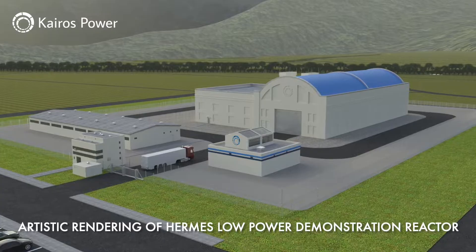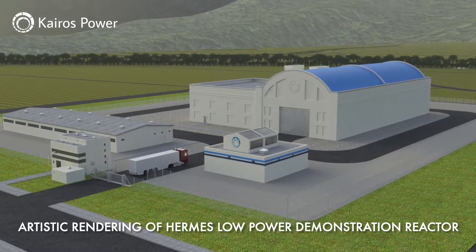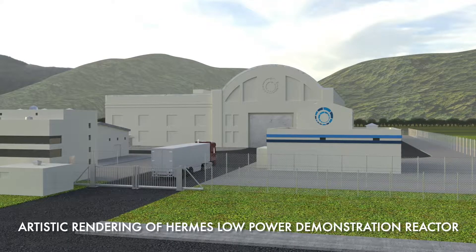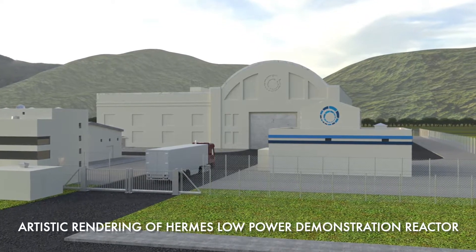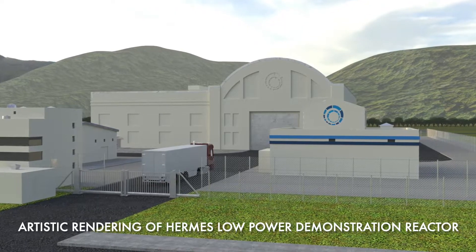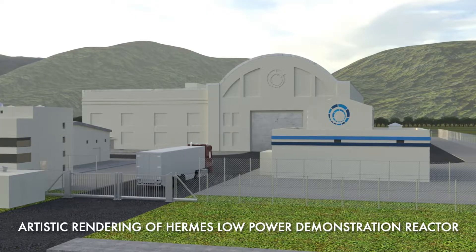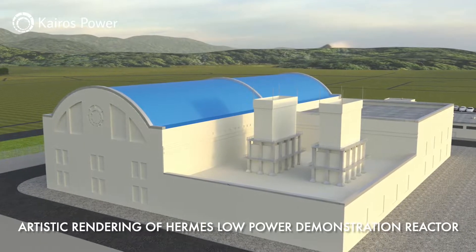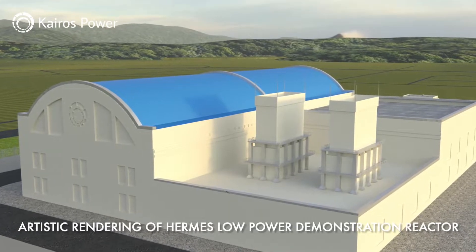Kairos Power is going to be deploying the Hermes Low Power Demonstration Reactor in Oak Ridge, Tennessee. While it will not generate electrical power, it will demonstrate the delivery of heat and temperatures that allow us to produce a wide variety of different products. Our major motivation in deploying the Hermes Low Power Demonstration Reactor is to demonstrate the environmental benefits of nuclear power.